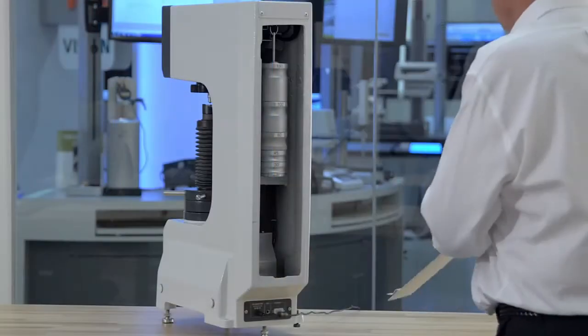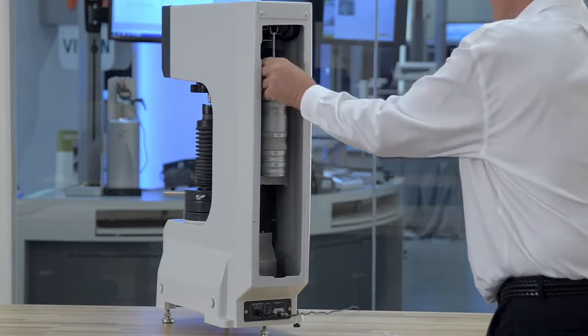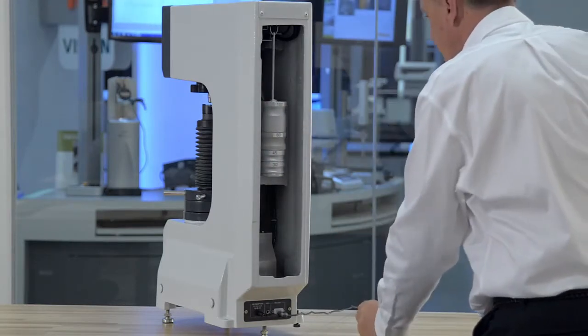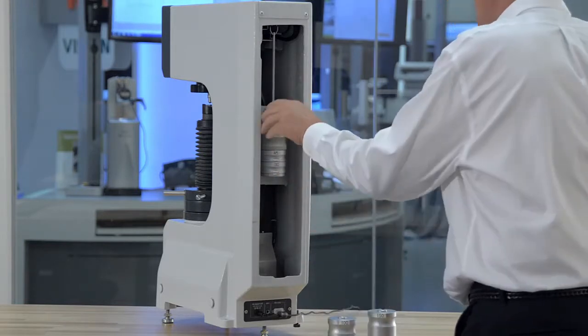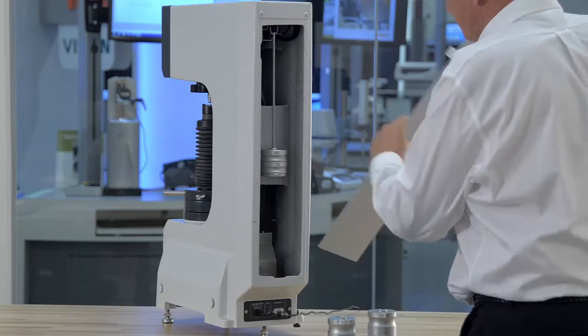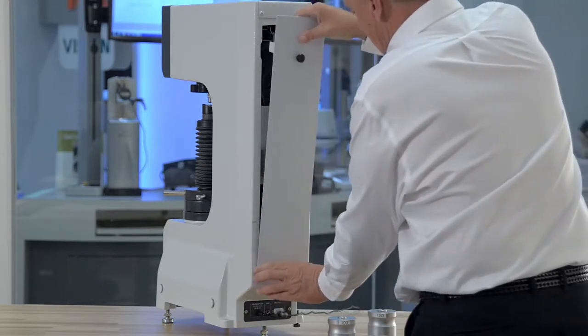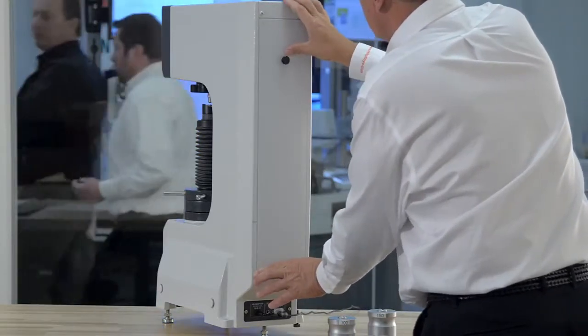Its twin tester design allows the operator to test on all 15 Rockwell scales and all 15 superficial scales when optional indenters are used. The adjustable hanging weight system is used to keep costs down and is a good option when you need a highly versatile tester for future testing requirements.